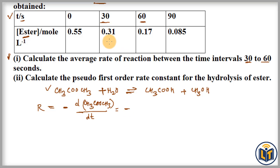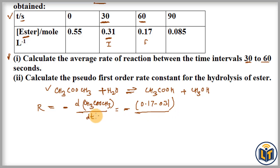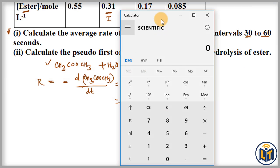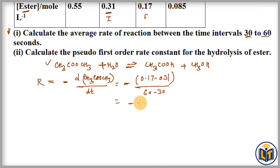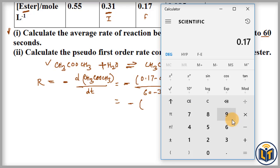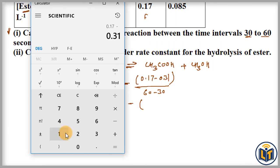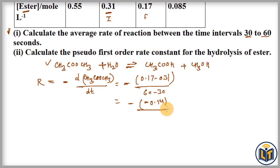In this time interval we calculate the average rate of reaction. This is the initial concentration of the reactant and this is the final concentration of the reactant. We plug in the values: rate equals negative of (final concentration minus initial concentration), which is (0.17 minus 0.31), divided by the change in time (60 minus 30). At the top we have minus bracket: 0.17 minus 0.31 equals minus 0.14.